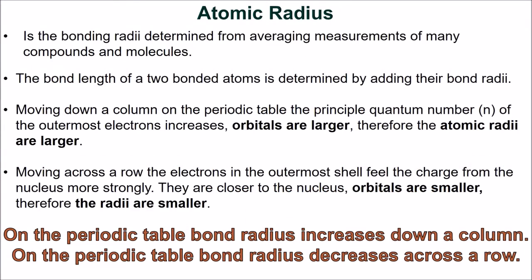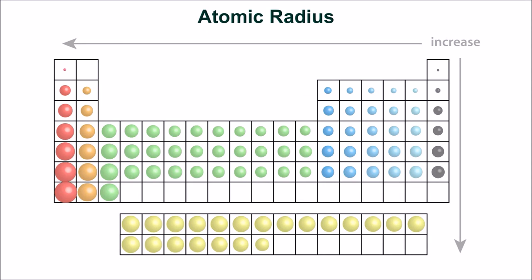The next property we are going to discuss is atomic radius. The atomic radius is the average bonding radius of an element, determined from averaging measurements of many compounds and molecules. The bond length of two bonded atoms is determined by adding their atomic radii. The atomic radius can be located on periodic tables, in chemistry textbooks, or in chemical constant databases. Moving down a column on the periodic table, the principal quantum number n of the outermost electrons increases — orbitals are larger, and therefore the atomic radii are larger. Moving across a row, the electrons in the outermost shell feel the charge from the nucleus more strongly, so orbitals are smaller and therefore the radii are smaller.